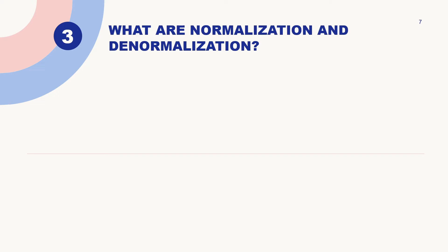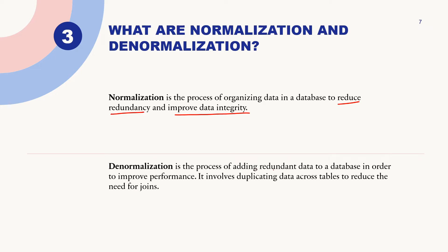What are normalization and denormalization? Normalization is the process of organizing data in a database to reduce redundancy and improve data integrity. Denormalization is the process of adding redundant data to a database in order to improve performance. It involves duplicating data across tables to reduce the need for joins. In denormalization, we'll have one master table with all the data like orders and customer names. In normalization, we'll have different tables like for orders, customers, and delivery, reducing duplicate data.